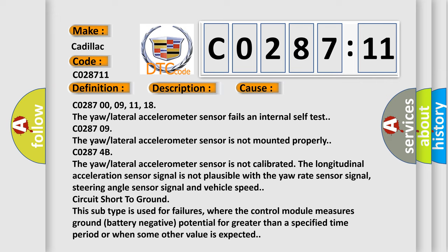C0287-00-09-11-18: The yaw lateral accelerometer sensor fails an internal self-test. C0287-09: The yaw lateral accelerometer sensor is not mounted properly.